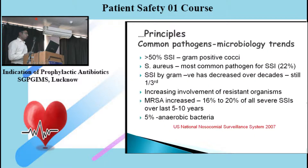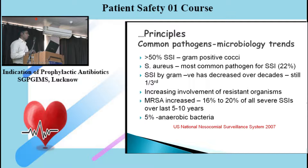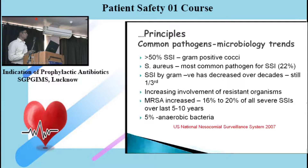Coming to common pathogen microbiology trends: most SSIs are caused by gram-positive cocci, and most commonly Staph aureus — 22% of all SSIs. Earlier in the 1970s and 1980s, gram-negative bacteria were the most important pathogens in surgical site infection, but over the last two decades this has decreased from 50% to around 30%.